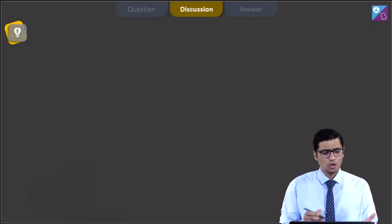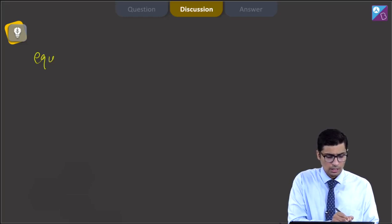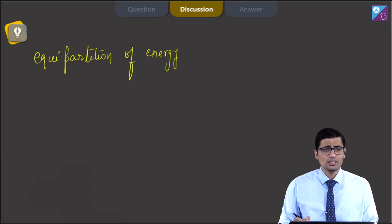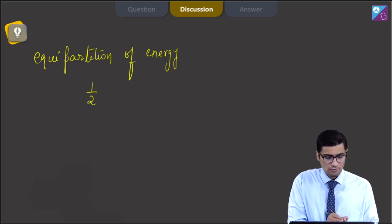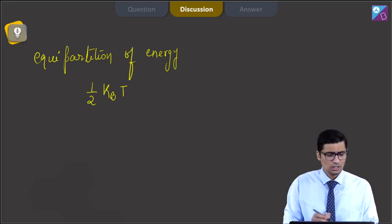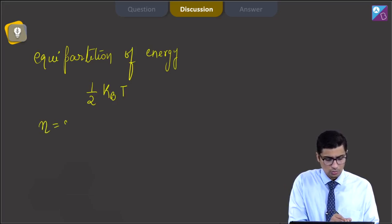Dear students, as per the law of equipartition of energy, the average thermal energy for gas molecules per degree of freedom is equal to half of KBT. Now for diatomic gas molecules, the number of degrees of freedom associated with the rotational motion is 2, that is n is equal to 2.